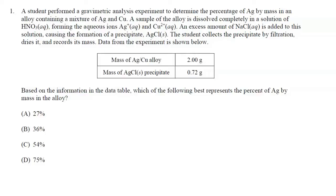A student performed a gravimetric analysis experiment to determine the percentage of silver by mass in an alloy containing a mixture of silver and copper. A sample of the alloy is dissolved completely in a solution of nitric acid, forming the aqueous ions Ag+ and Cu2+. Although we are given the mass of the silver-copper alloy, which is 2.00 grams, we can't really do anything with that number yet. Let's keep reading the question to figure out what the experiment is all about.